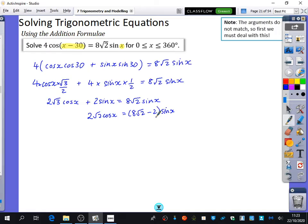And then I already mentioned earlier how we solve these equations. What do I do when we have a mix of sine and cos? We divide by cos x. So if I divide both sides by cos x, they cancel. And I get 2√3 equals 8√2 - 2 tan x.